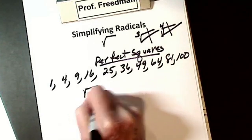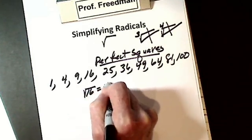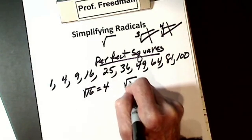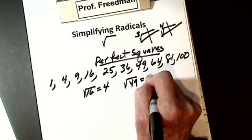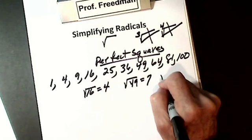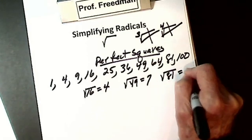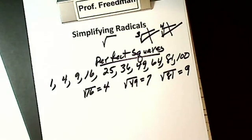If I want to take the square root of 16, it's just going to be 4. I want to take the square root of 49, it's going to be 7. I want to take the square root of 81, it's going to be 9. So I can take the square root of any perfect square.